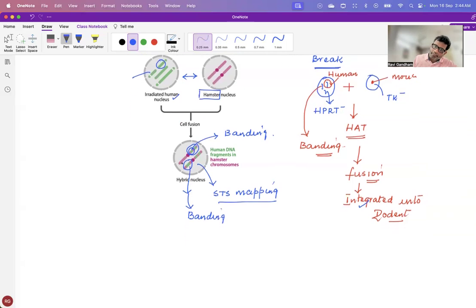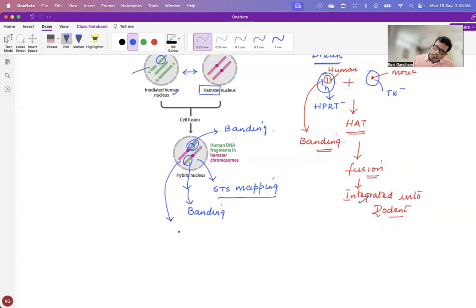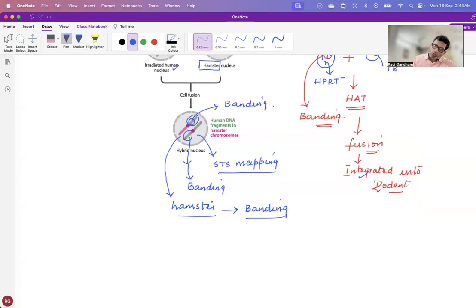Now, how do you go for banding pattern here? Take these chromosomes in entirety or in totality from the hamster and then band them by going for different banding techniques. And when you go for different banding techniques, you have certain segments on the chromosome of hamster that belong to specific bands of hamster and certain segments that belong to specific bands of humans. Now compare these bands of humans with already established banding patterns of different chromosomes and then identify the chromosome.